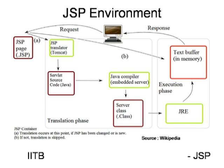If the page has dynamic content — if there is Java code — it goes to the Java translator, where it is translated into a servlet. A servlet is a Java class with the main feature of handling request and response between client and server. So the JSP page is converted into a servlet, which is then compiled as a class file, and the data is sent to the browser. This is the environment of JSP.